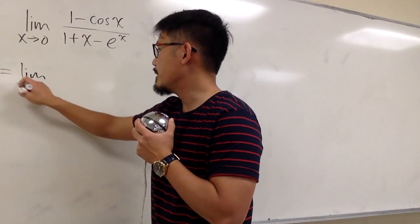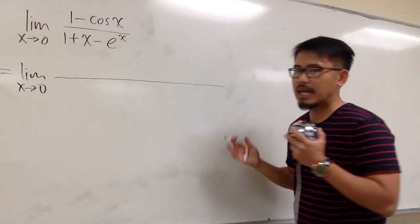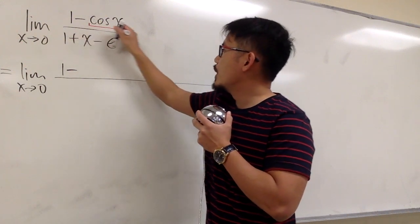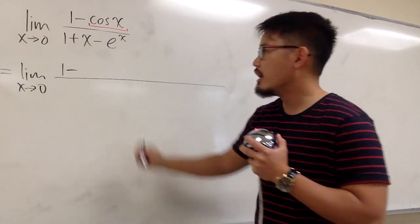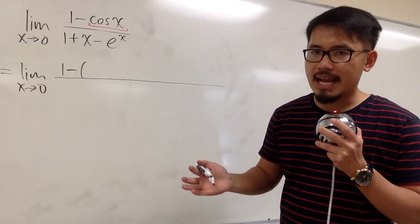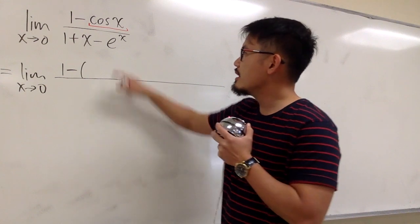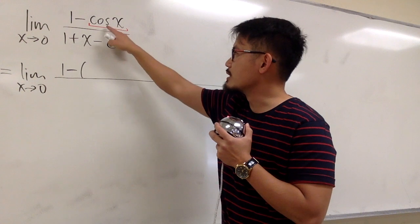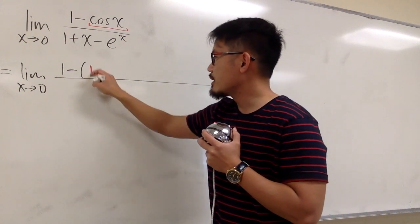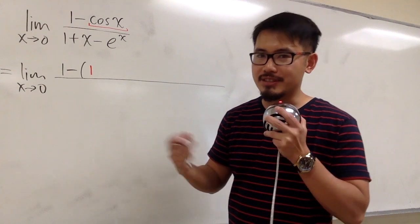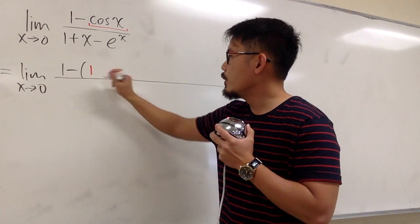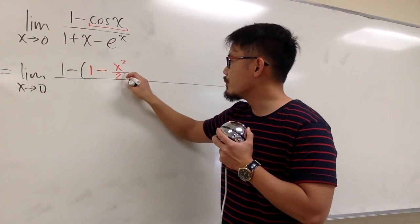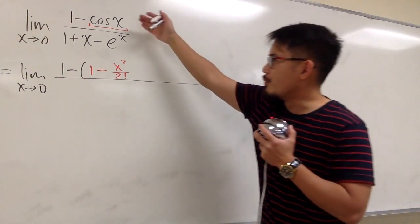Let's focus on the numerator first. We have 1 minus the power series for cosine x. Remember that cosine x is an even function, and the first term for cosine x is 1, because cosine of zero is 1. And then for cosine, just like for sine, they are alternating. The next term is minus x squared over 2 factorial.